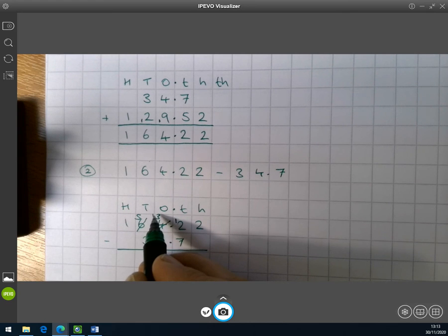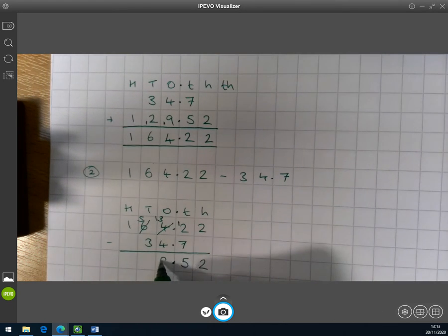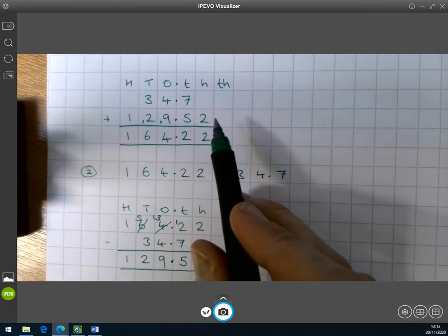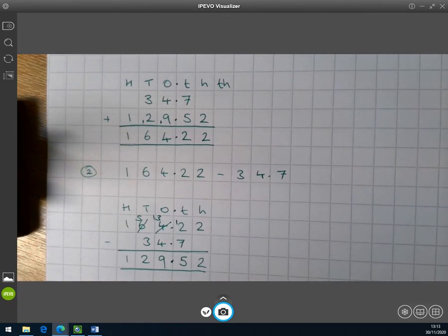We've taken that 10 for 10 ones. So now I've got 13 ones take away 4 is 9 ones. 5 take away 3 is 2. And 1 take away nothing is 1. And we're very happy to see we get to 129.52, which is exactly what we had here.